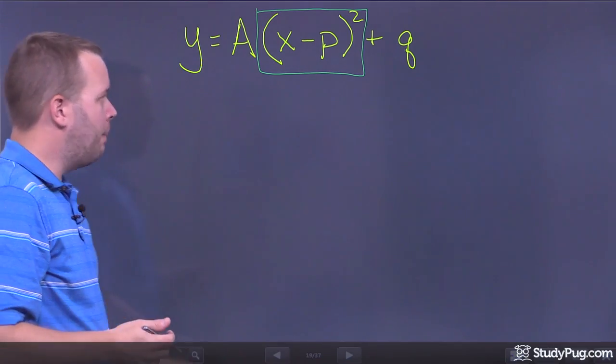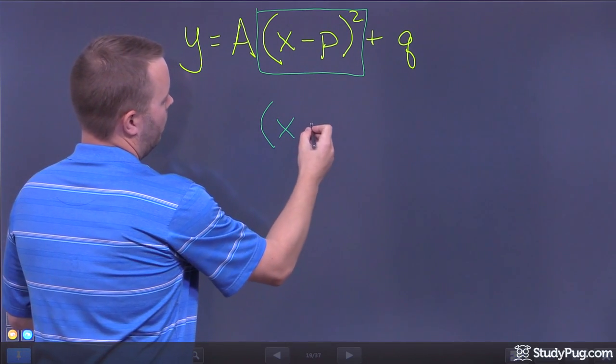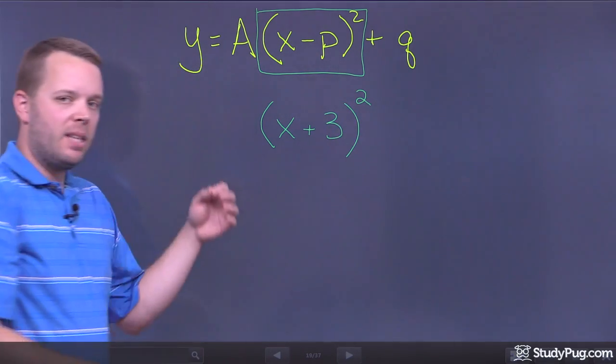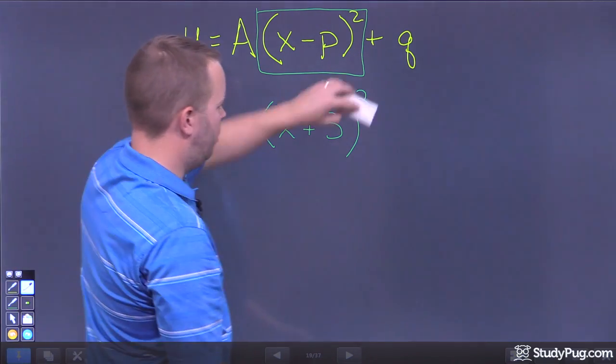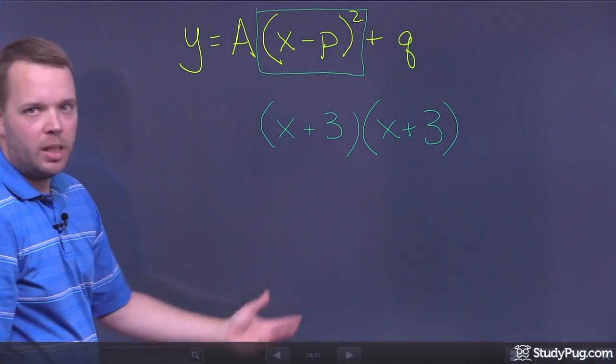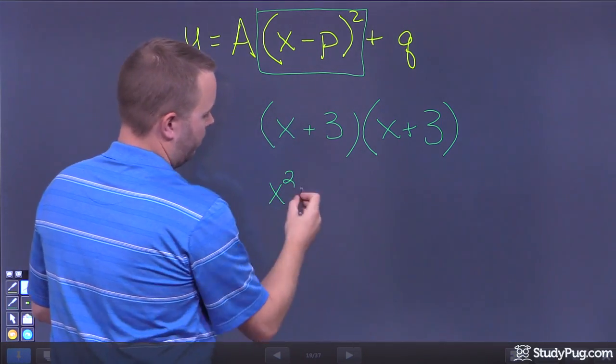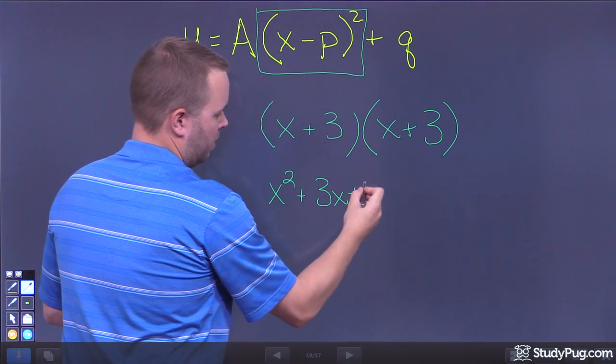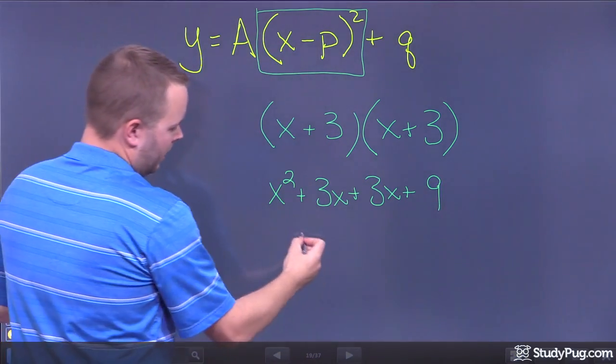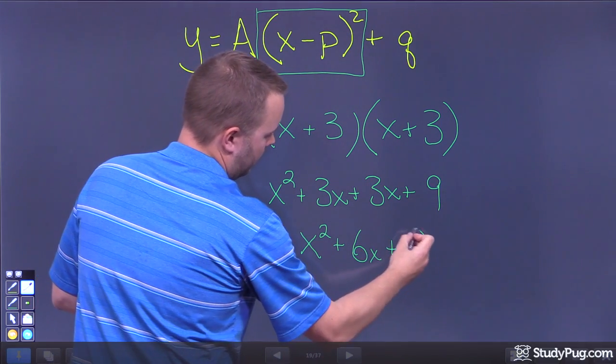So let's take a look at what that looks like. First of all, I'm going to take some random binomial and I'm going to expand it. So let's take some random binomial, let's say x, let's keep it simple, plus 3. Now, if I'm squaring that, that means I'm multiplying it by itself. So let's do that. So we're going to times that again by x plus 3. When I multiply these two things, I'm going to use my distributive property. x times x is x squared. x times positive 3 is positive 3x. 3 times x is positive 3x. And 3 times 3 is positive 9.